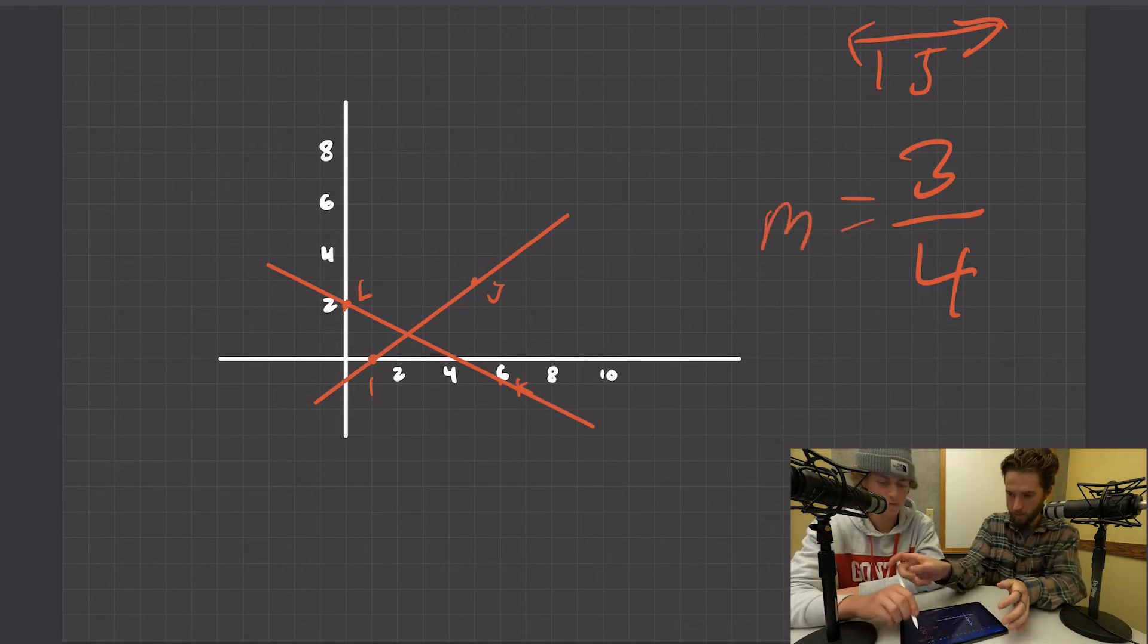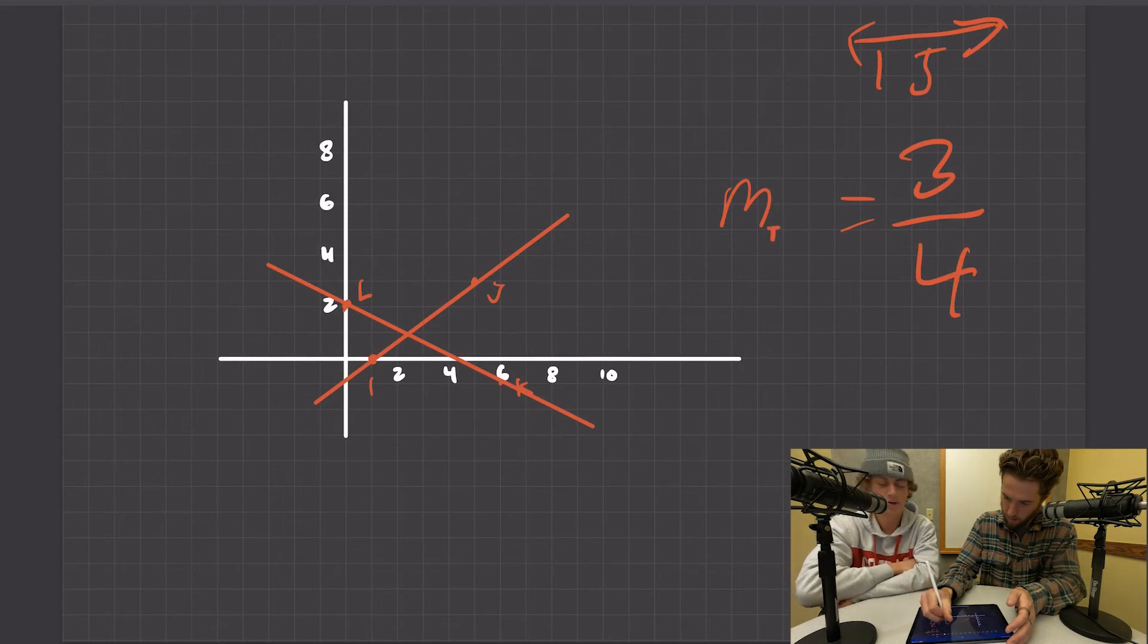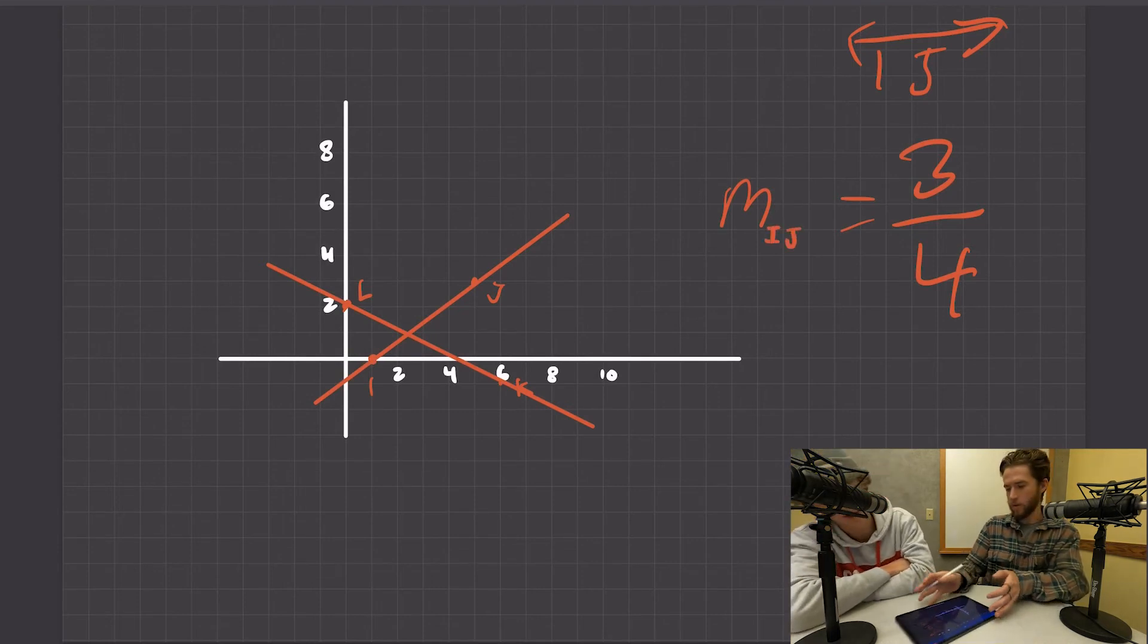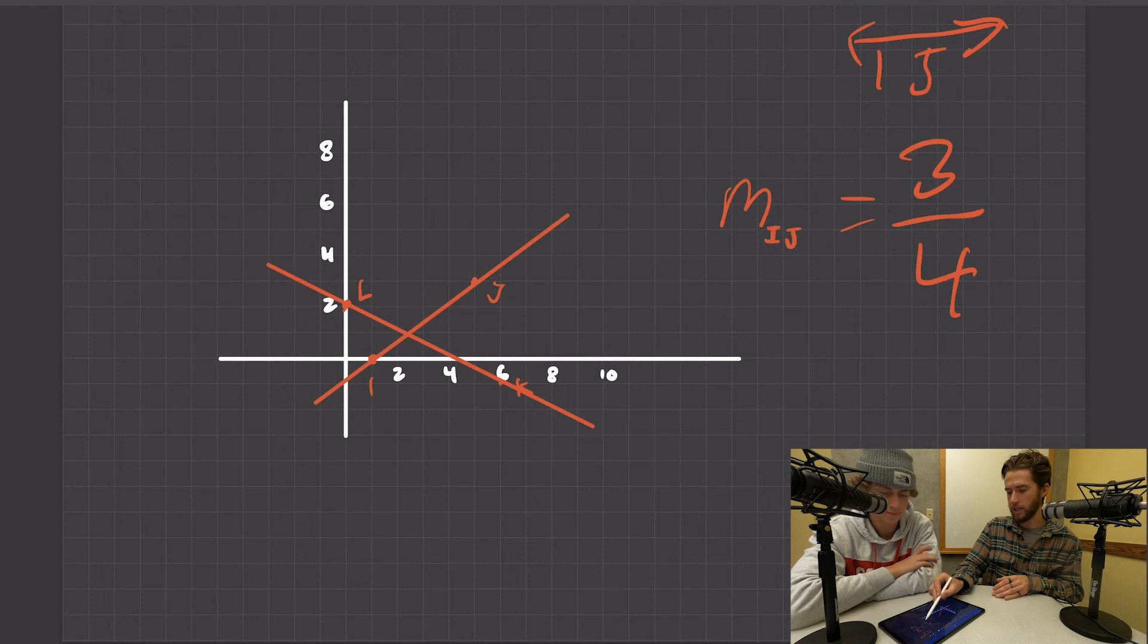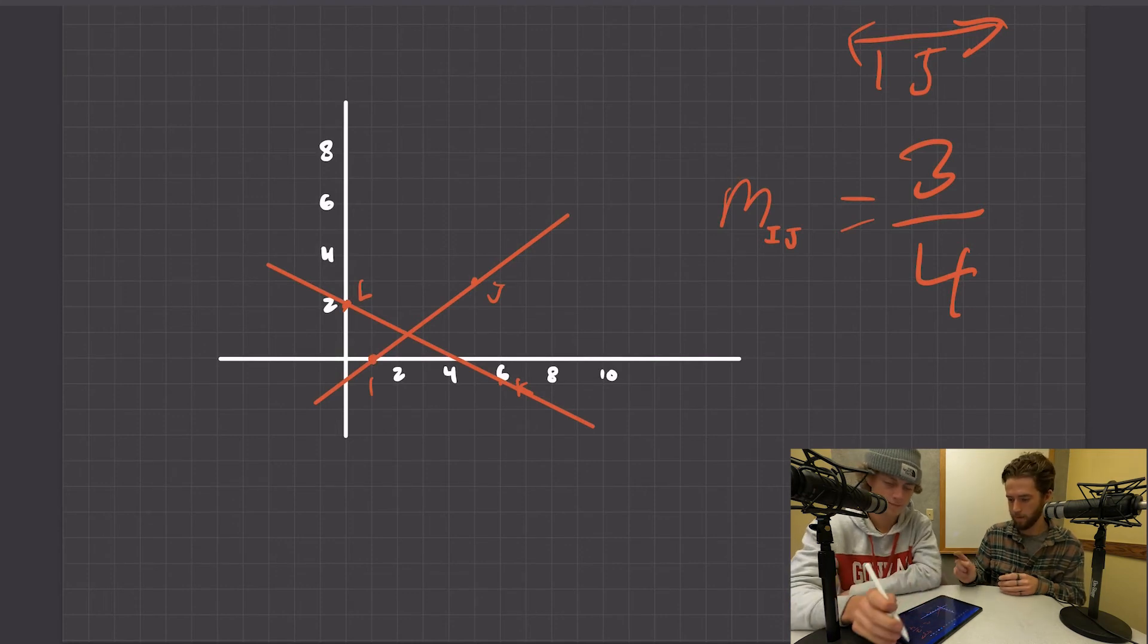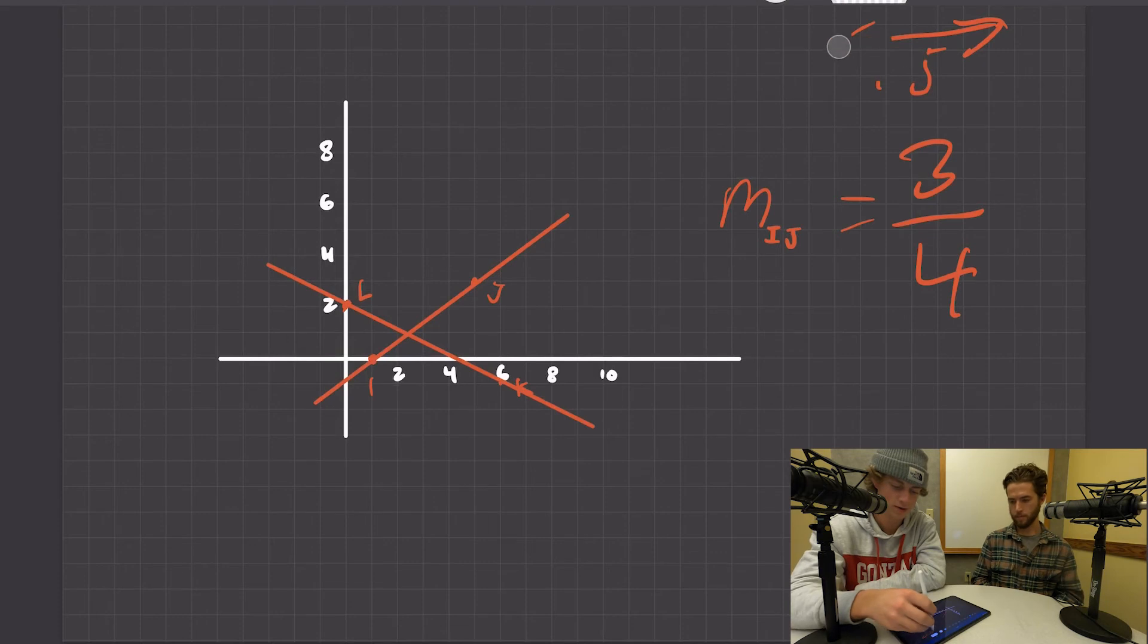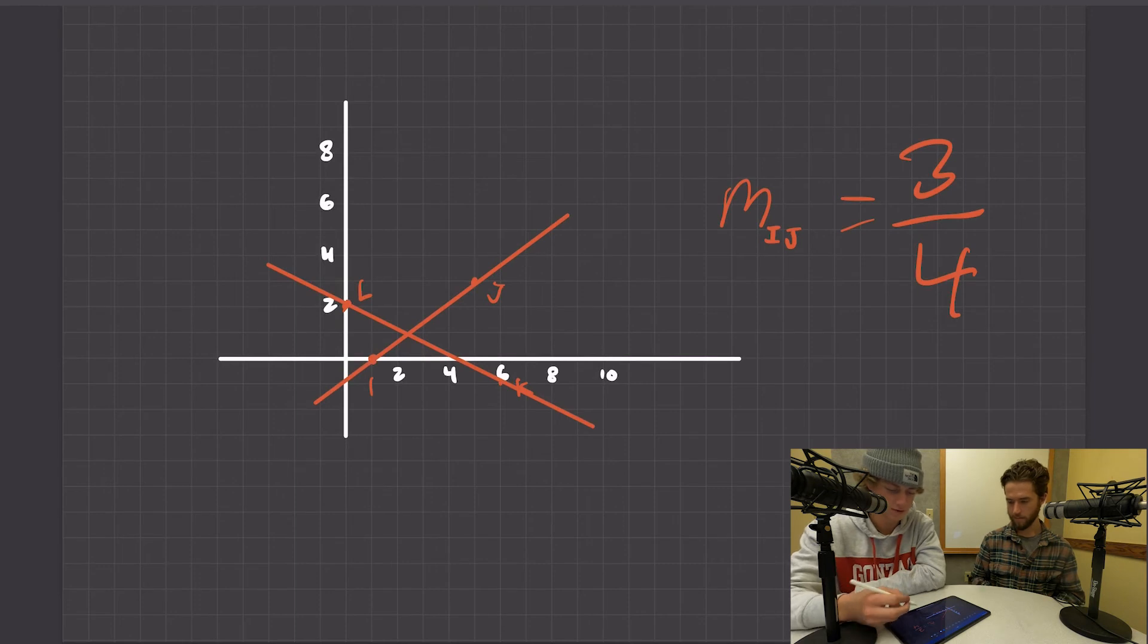Let me show you one last little thing. This is like a way to put all that notation in one. So the slope of IJ, this is called a subscript, it's just additional information. M subscript IJ is three fourths, and then m of LK will be a different number.